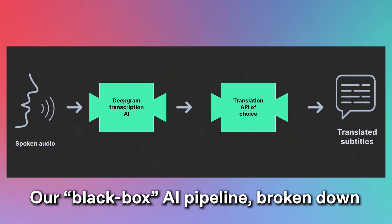And upon receiving a transcription, we can call in our translation API of choice. The output should be translated text. Alright, with that pipeline fully fleshed out, let's build it.